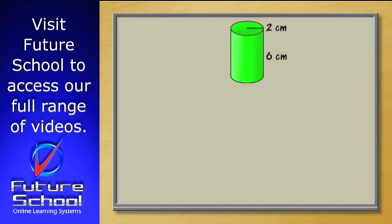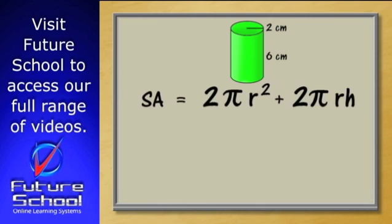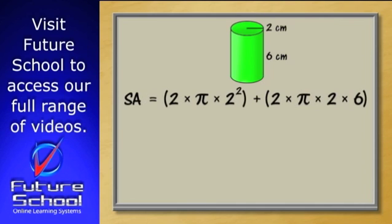The cylinder has a labelled radius of two centimetres and a height of six centimetres. If we transfer these measurements into the formula, we have two times pi times two squared plus two times pi times two times six.